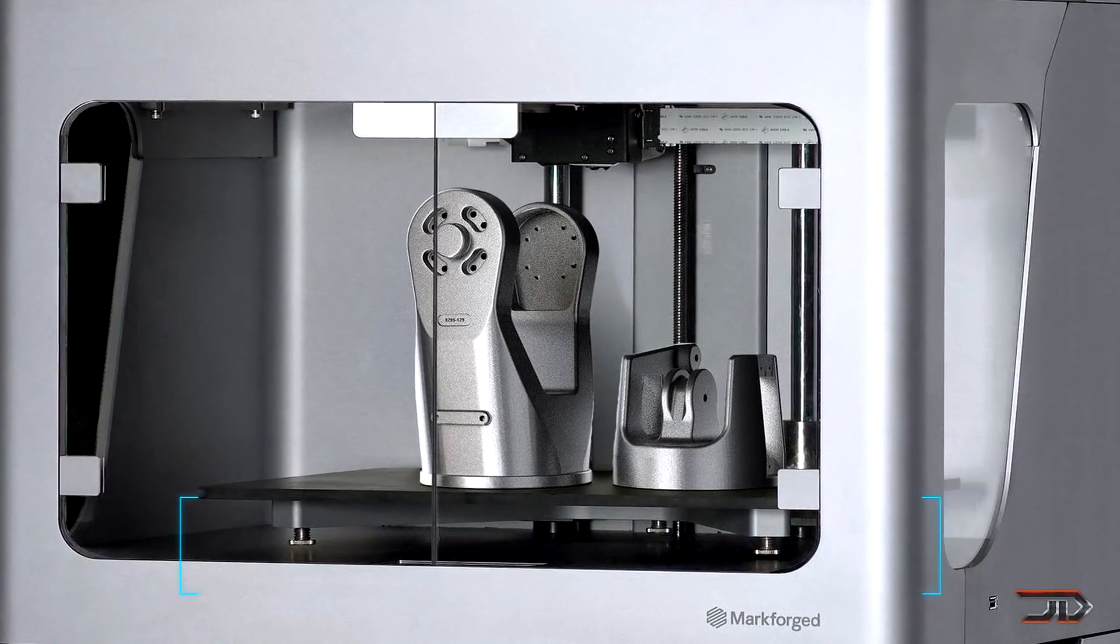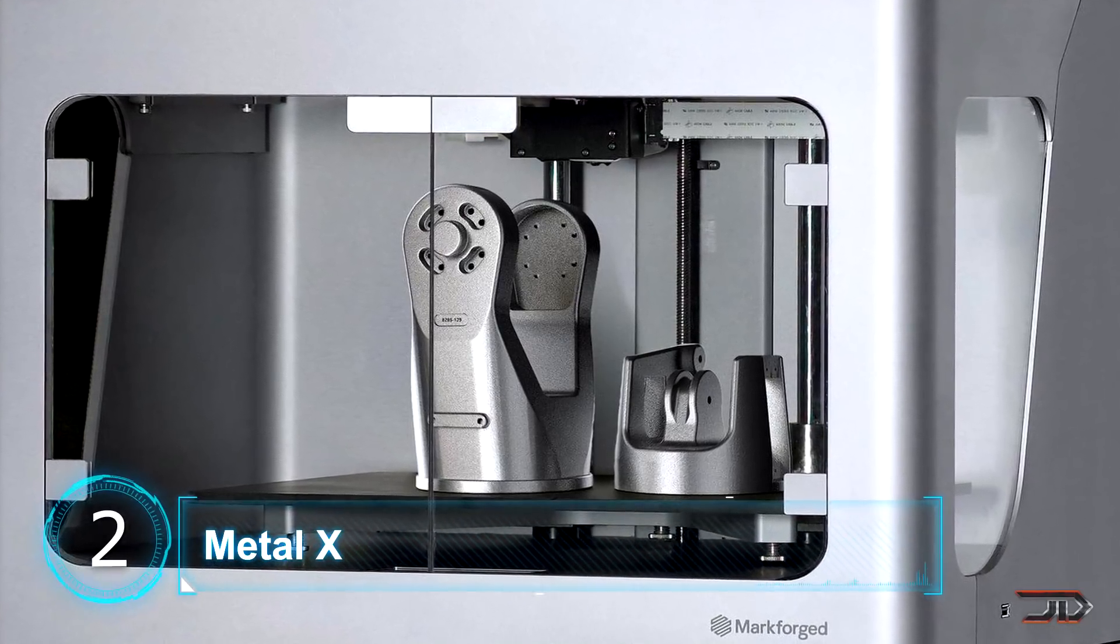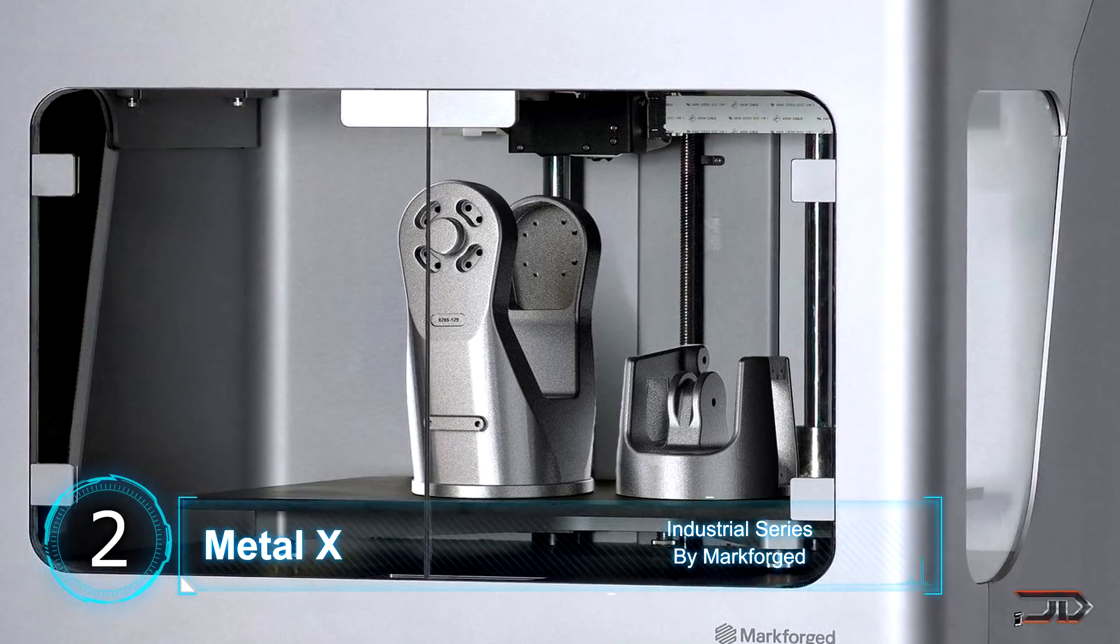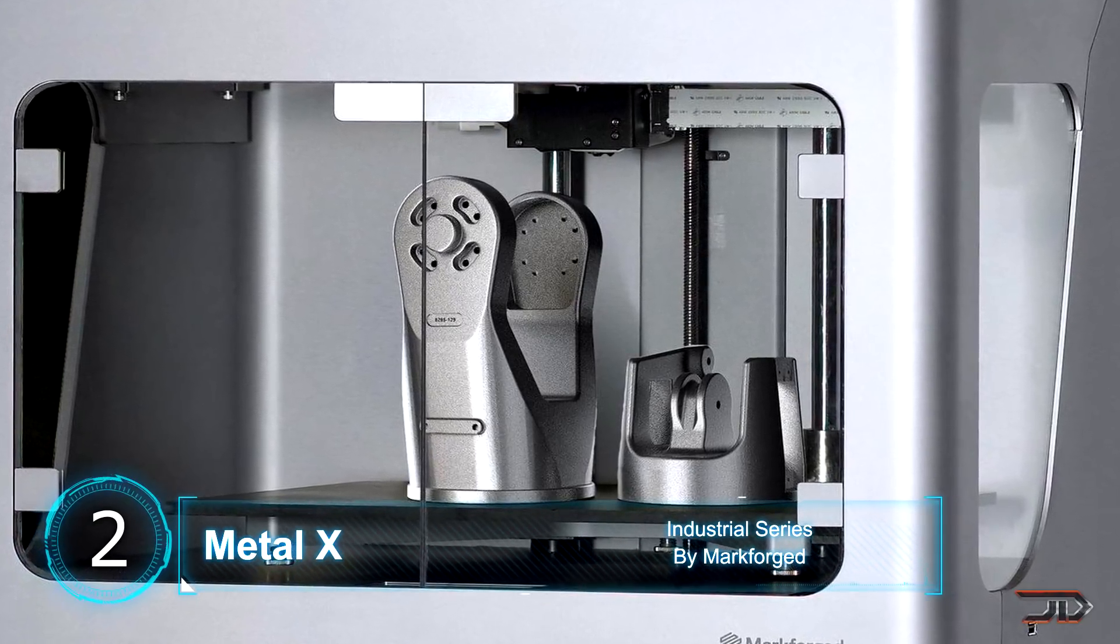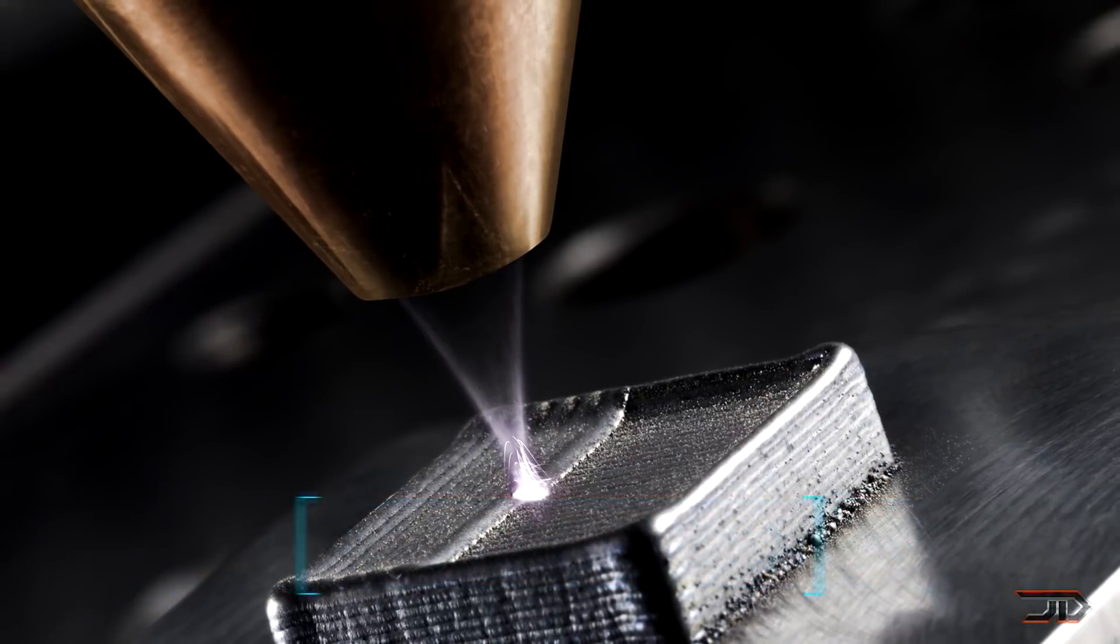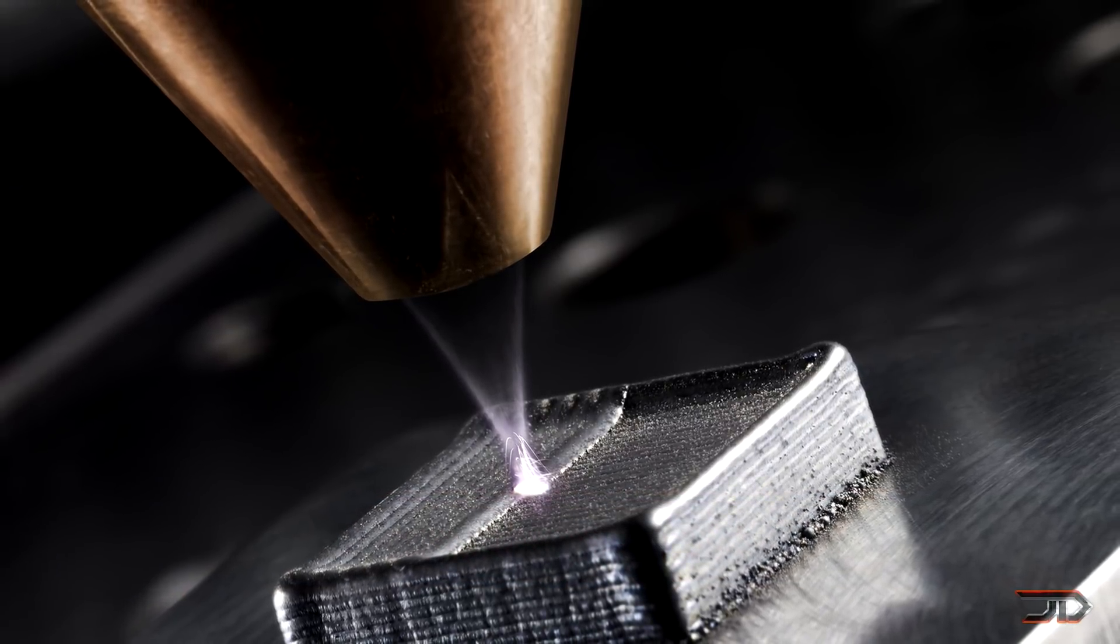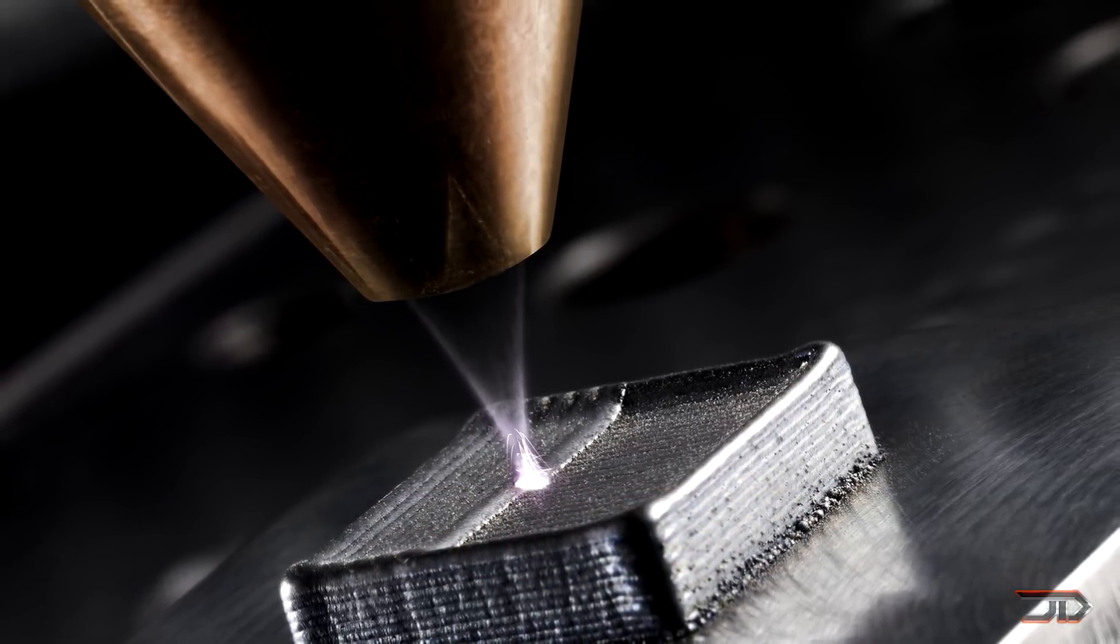At number 2, the Metal X. Metal 3D printers have limitations when it comes to terms of strength and scalability. This new Metal X machine is really neat, and it's a different type of process which prints metal powder into plastic binders.